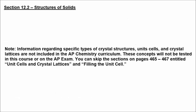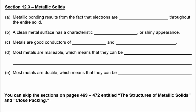Now on to the next part. It says, note, information regarding specific types of crystal structures, unit cells, and crystal lattices. This information is not included in the AP chemistry curriculum. So we're going to skip the sections on pages 465 through 467 entitled unit cells and crystal lattices and filling the unit cell.